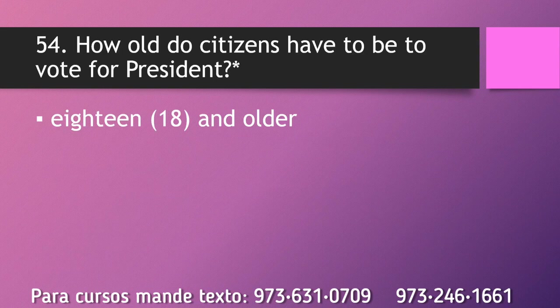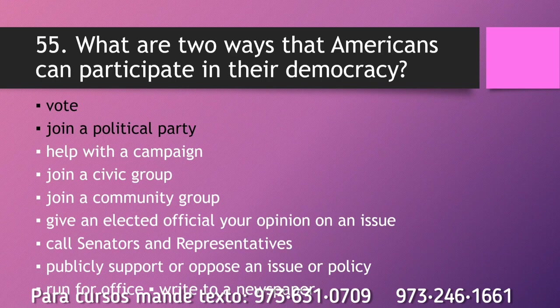How old do citizens have to be to vote for president? Eighteen and older. What are two ways that Americans can participate in their democracy? Vote. Join a political party.